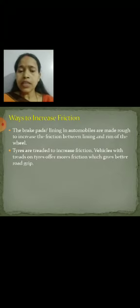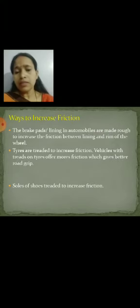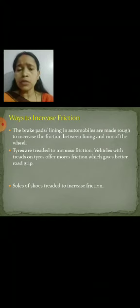Tires are treaded to increase friction. Vehicles with treads on tires offer more friction, which gives a better road grip. The soles of shoes are also treaded to increase friction. You can see the hills and valleys in shoe soles — they are there to increase friction; without them you may slip.